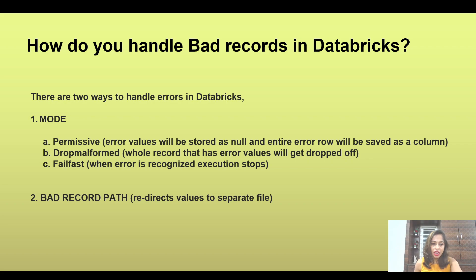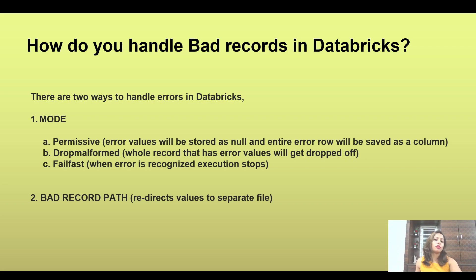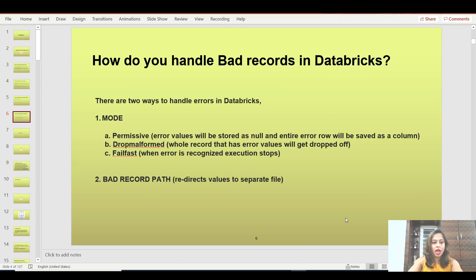In permissive mode, if data has error values or mismatched values, they will be stored as null in the dataframe, and the entire erroneous row will be saved in a separate column. In drop malformed mode, the entire row containing an error value gets dropped from the dataframe. Fail fast mode stops execution immediately upon encountering an error — it errors out the notebook as soon as the error is recognized.